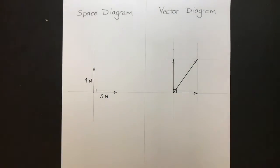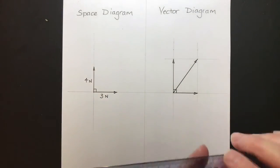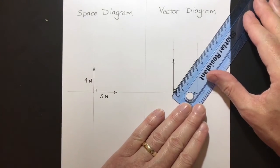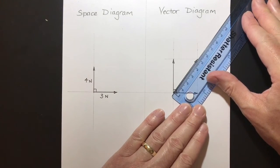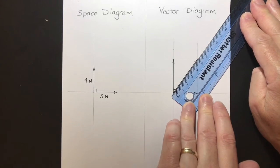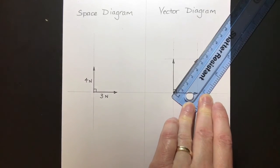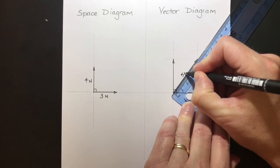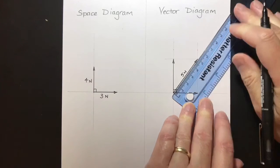But what's the resultant value? Well, what we do is we measure it. And here we can see that resultant value is 5 centimeters. Let's mark that on there. If it's 5 centimeters, it's going to be 5 Newtons. There we go.